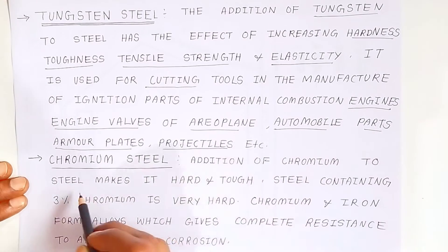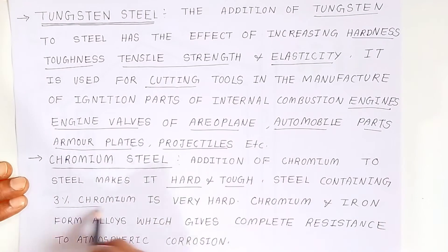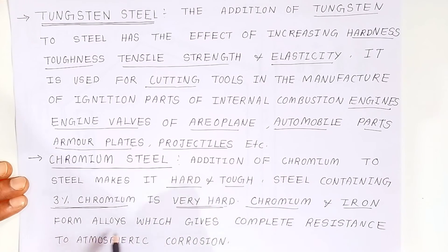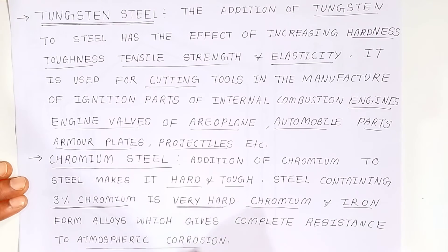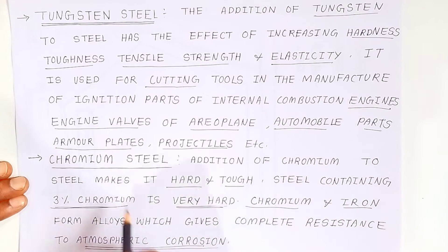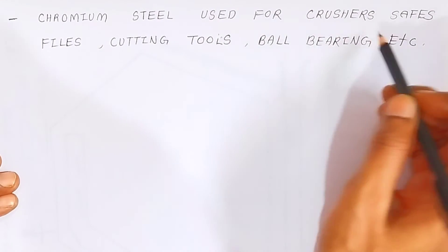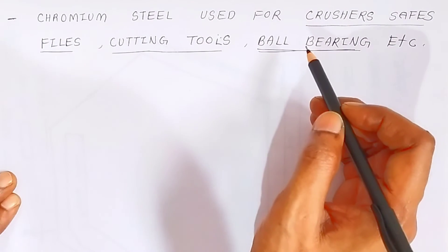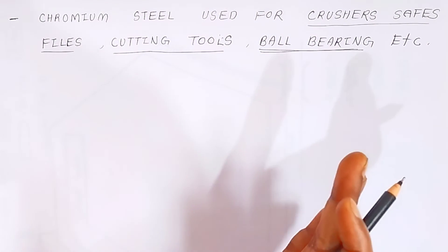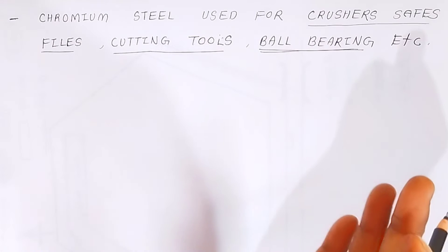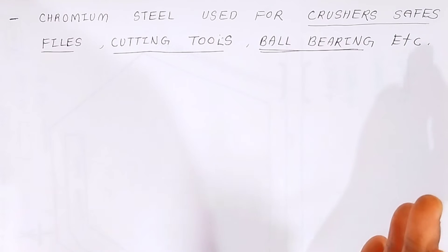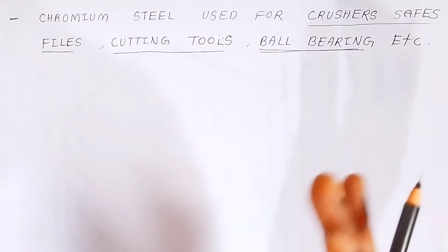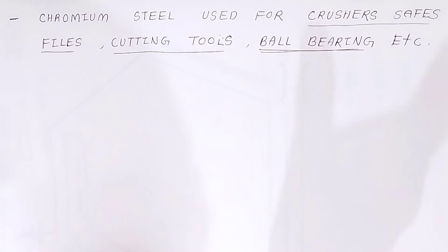Chromium steel: the addition of chromium to steel makes it very hard. Steel containing 3% chromium is very hard. Chromium and iron form alloys which give complete resistance to atmospheric corrosion. Chromium steels are used for crushers, files, cutting tools, and ball bearings. This concludes the first part of the answer on ferrous alloys and their classification. In the next video, we will see non-ferrous alloys and their classification. Thank you very much, have a nice day, God bless you.